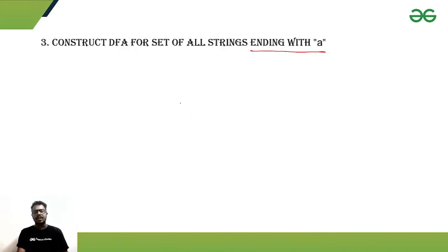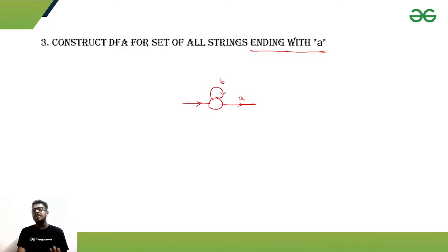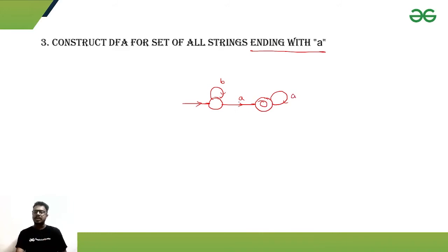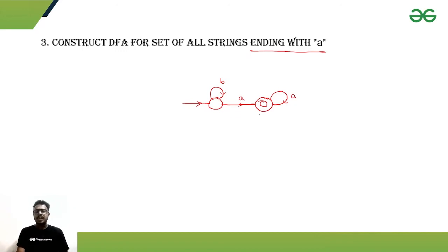The last case is a string ending with 'a'. From the initial state, getting b's won't matter. But when we get an 'a', we may think this is maybe the last symbol, so we go to the final state. In the final state, if we are getting more a's, each of those could also be the last symbol of the string.